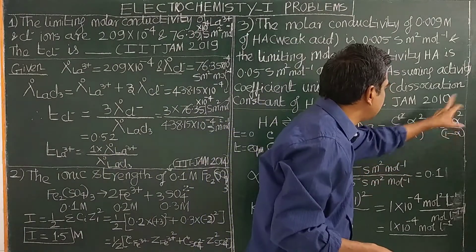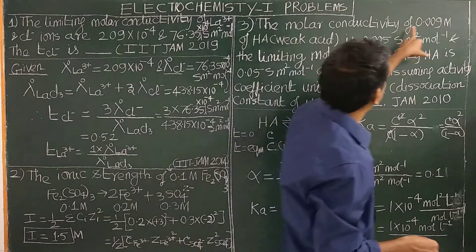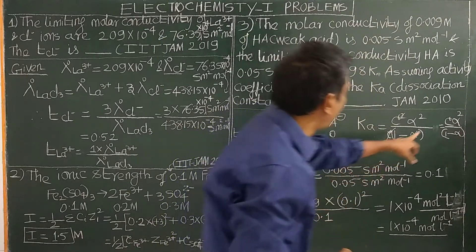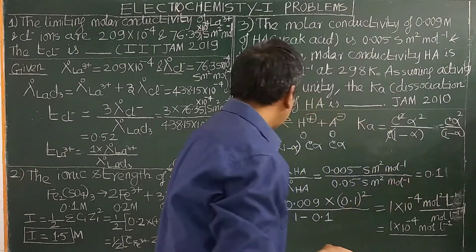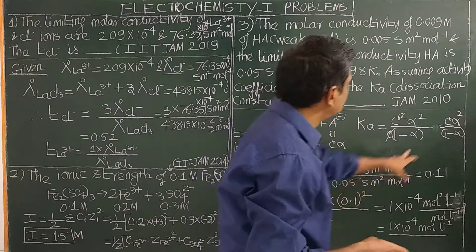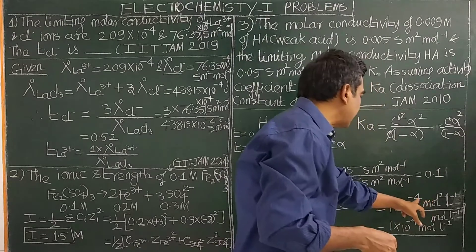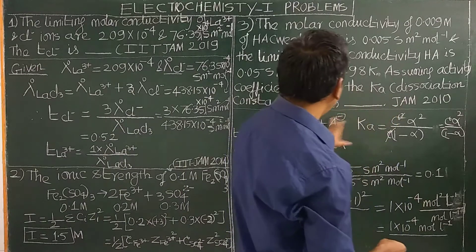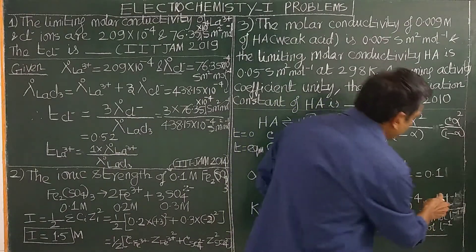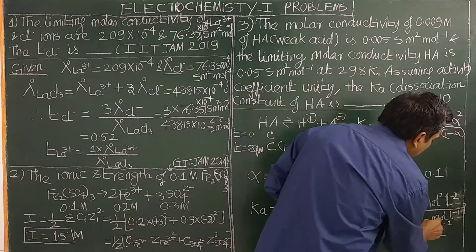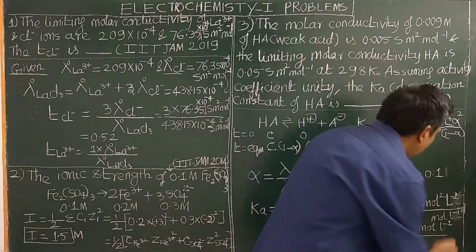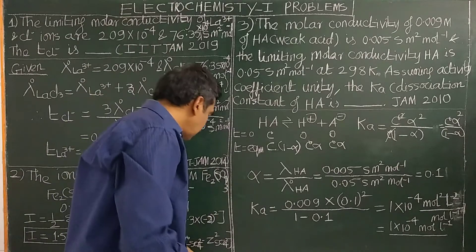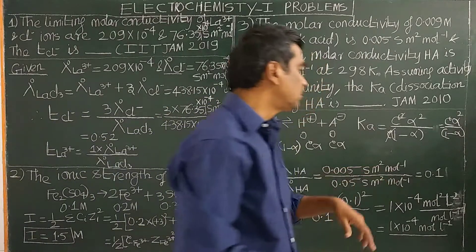Substituting the values: c = 0.009, α = 0.1, Ka = 0.009 × (0.1)² / (1 − 0.1) = 1 × 10⁻⁴ mol per liter. The unit is moles per liter. Always write units along with the values. Thank you for watching.